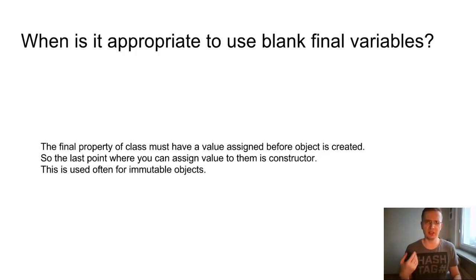When is it appropriate to use blank final variables? The final property of a class must have a value assigned before an object is created. So the last point when you can assign a value is a constructor. This is used often for immutable objects.